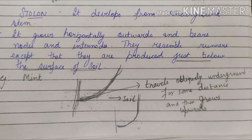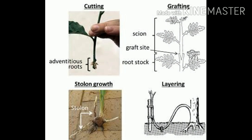This is also a modification of sub-aerial stem. Here, the stem develops underground and then grows horizontally outwards for some distance, bearing nodes and internodes.